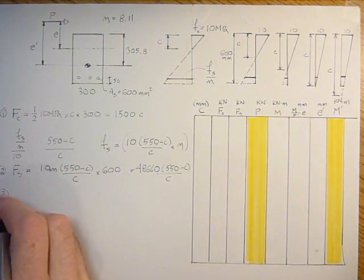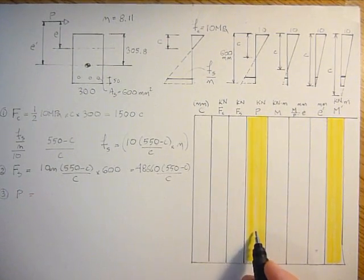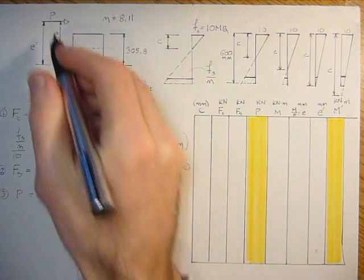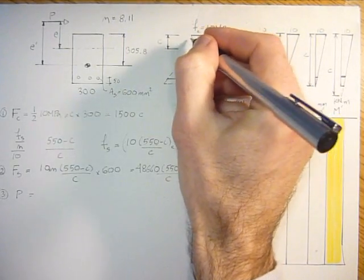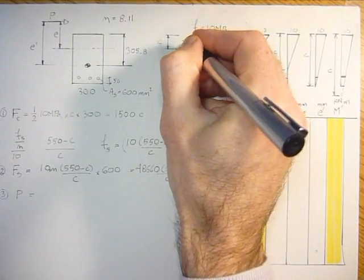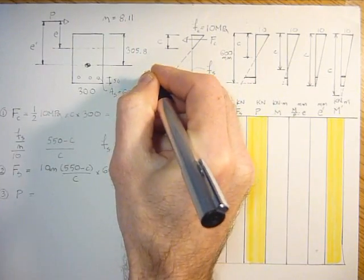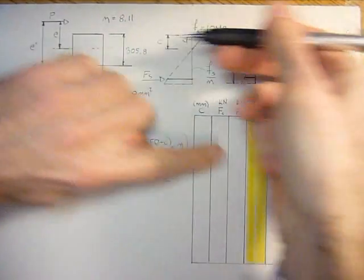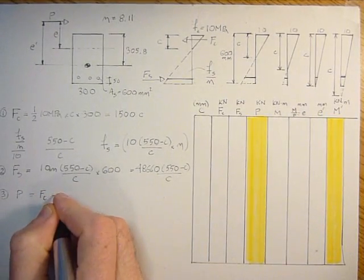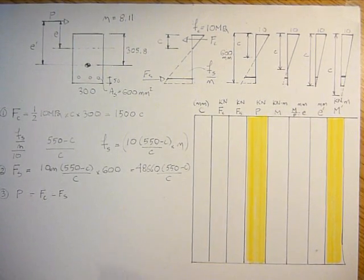And then the third equation, P, which is a point for the graph. That's why I've highlighted it yellow. We're going to compare these two values on the graph. The axial load is just the residual, the leftover, between force in concrete and force in steel. We have a force in concrete here, Fc, and we have a force in steel here, Fs. And whatever the difference is between that, that's taken by P. So P equals the force in the concrete minus the force in the steel.